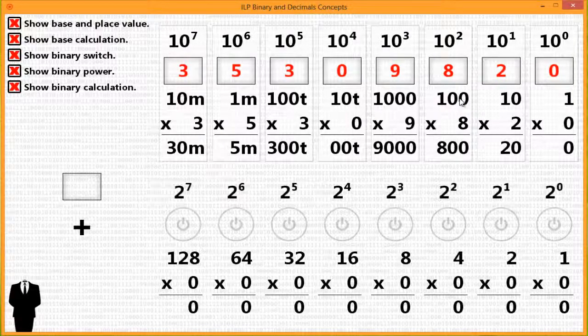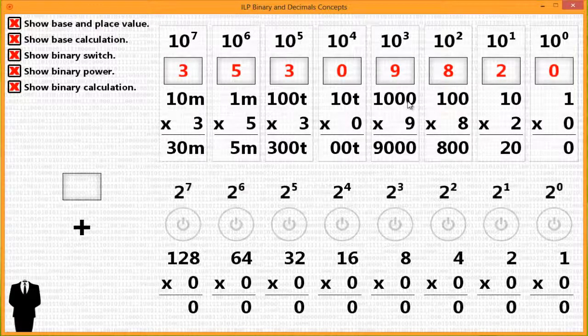And again, from 100 to the next place value, it's by 10. So 100 times 10 is 1000.